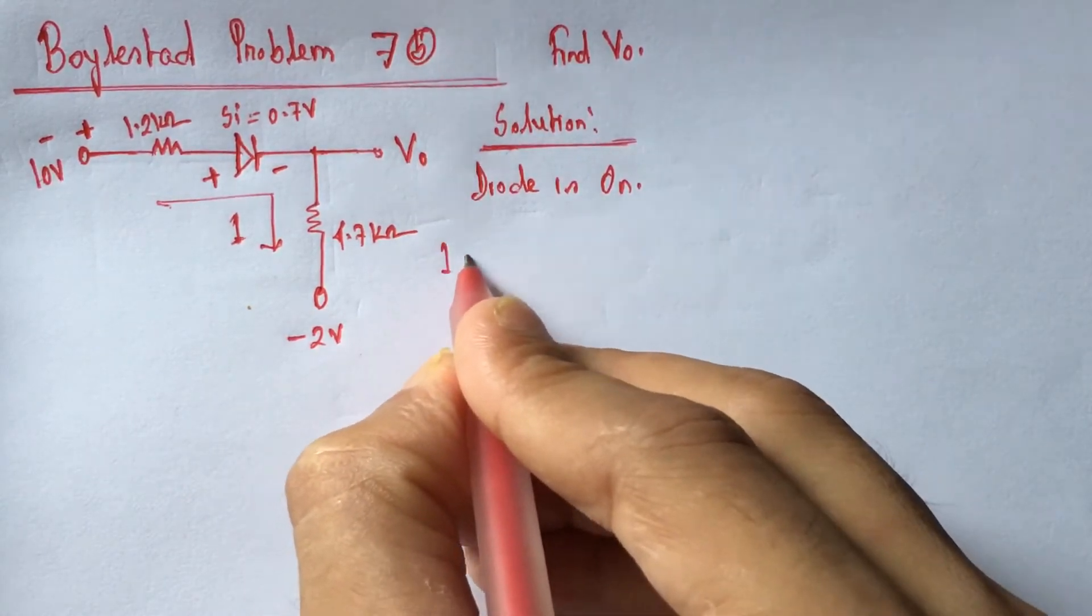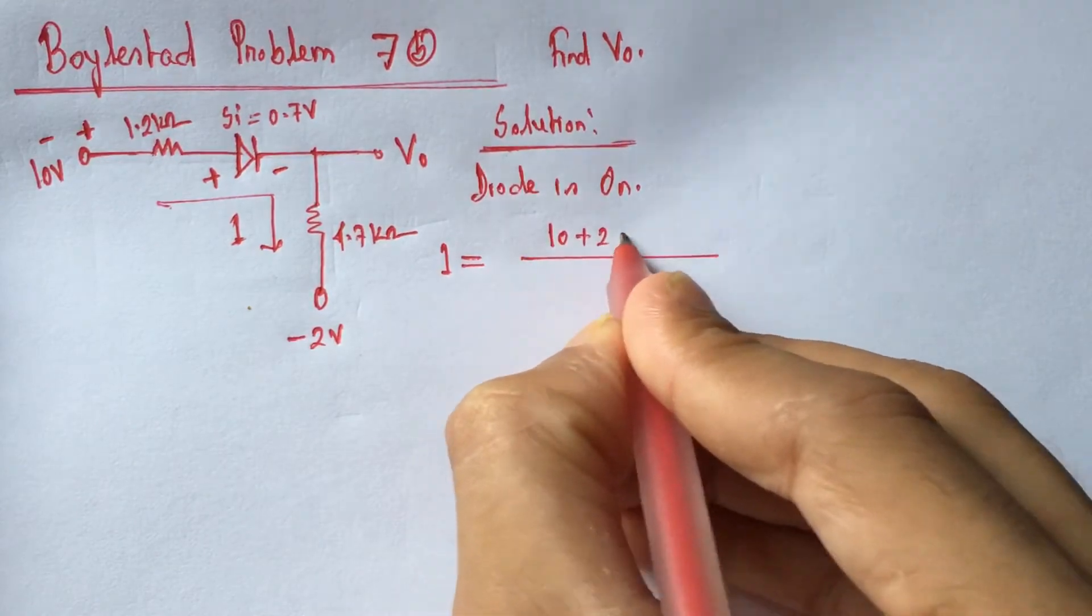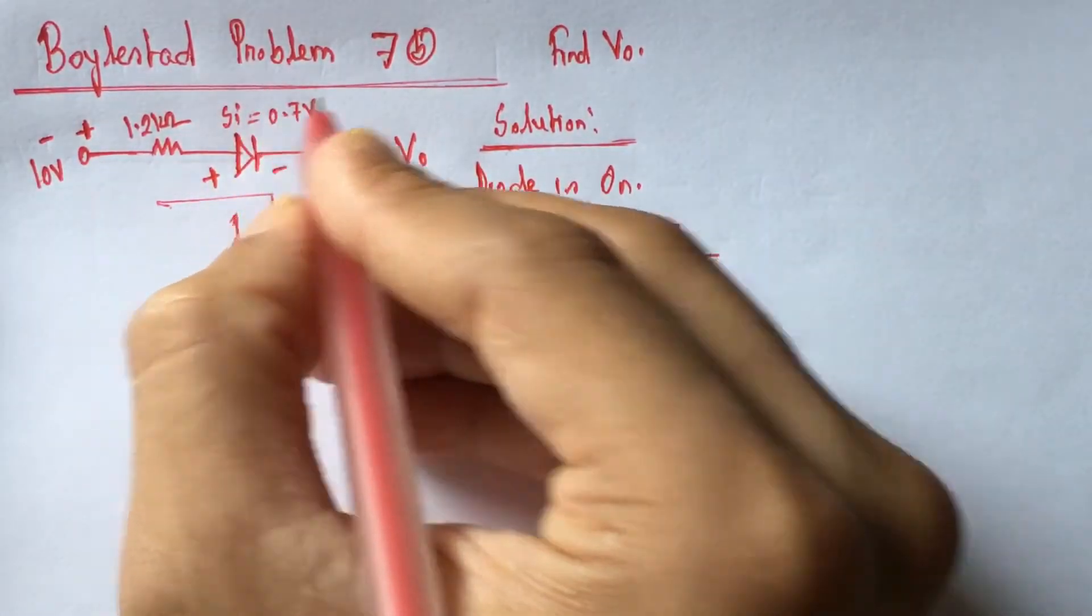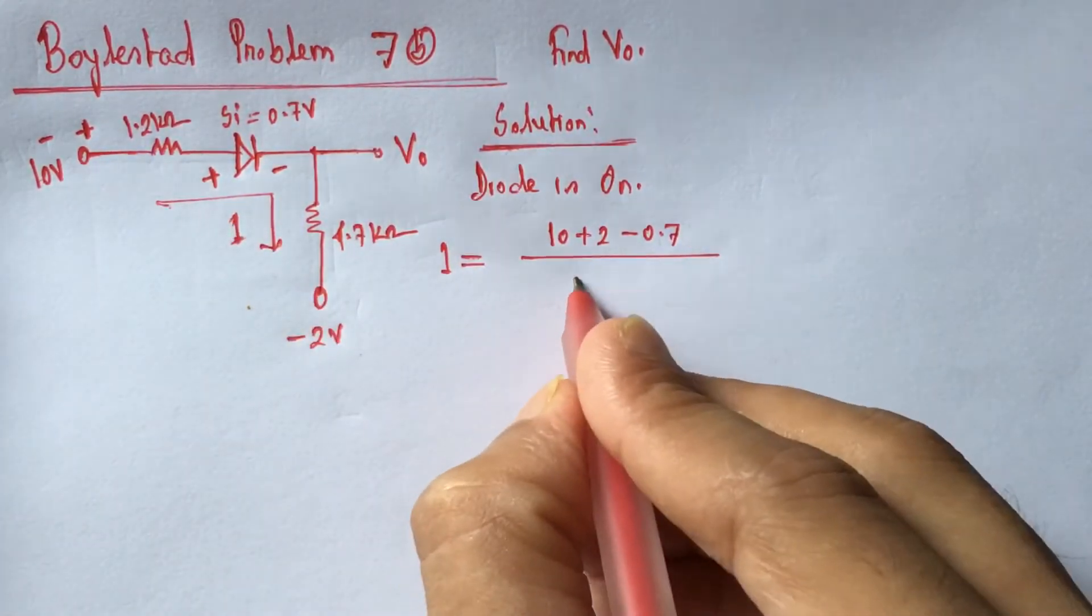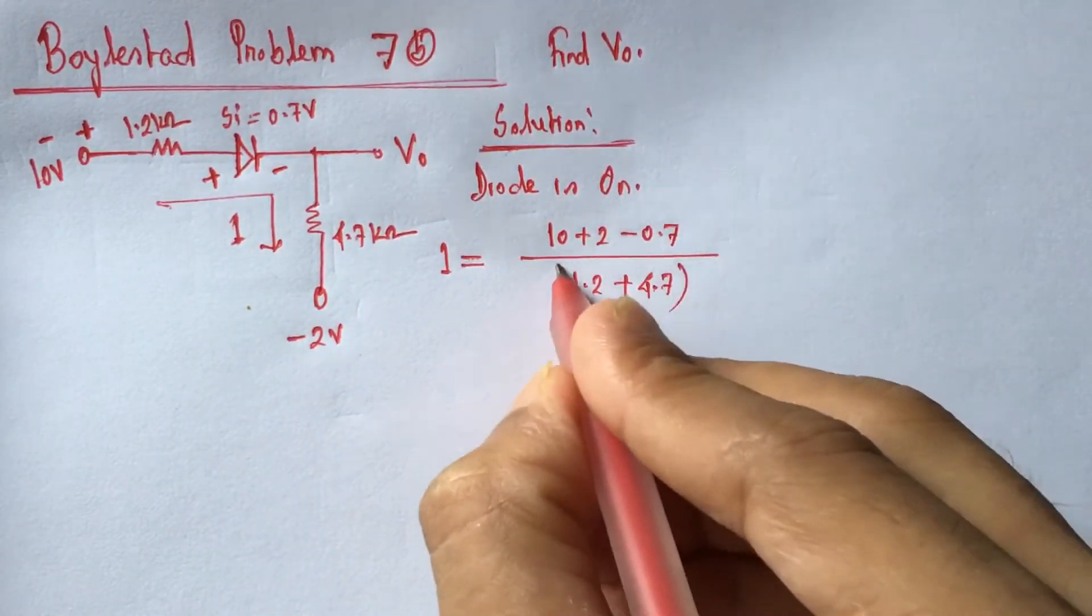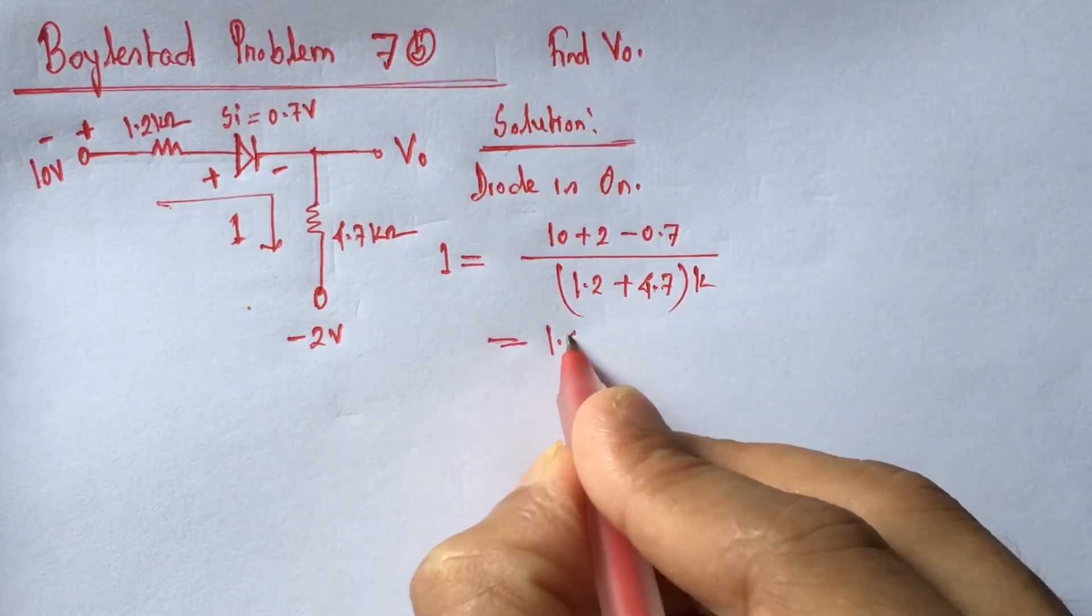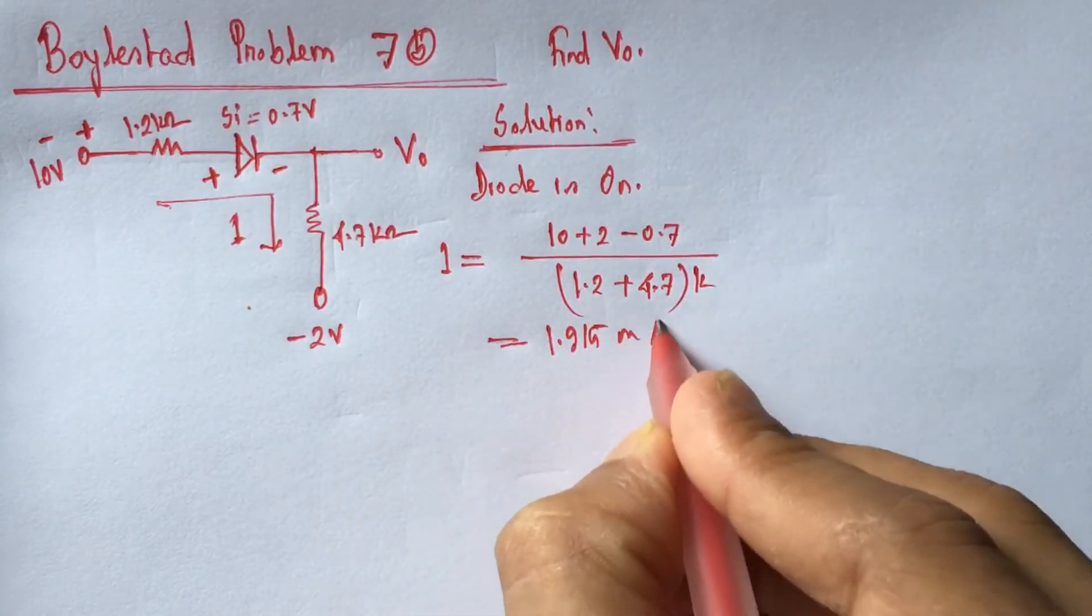Now, the current I can be determined by using the equation: 10 plus 2 minus 0.7, this is 0.7, divided by 1.2 kilo, 1.2 plus 4.7, 4.7 kilo ohm. And this is 1.915 milliampere.